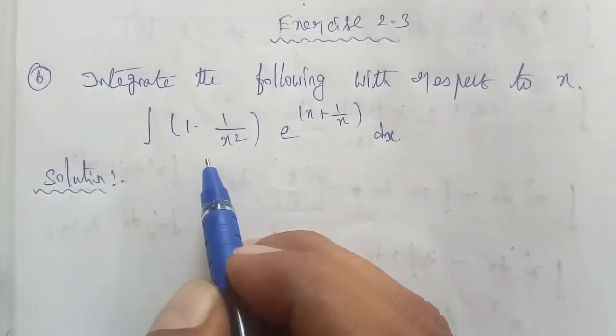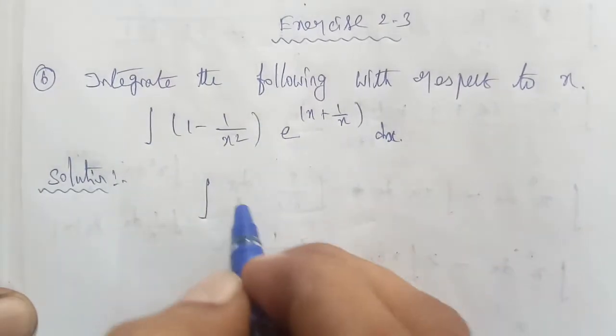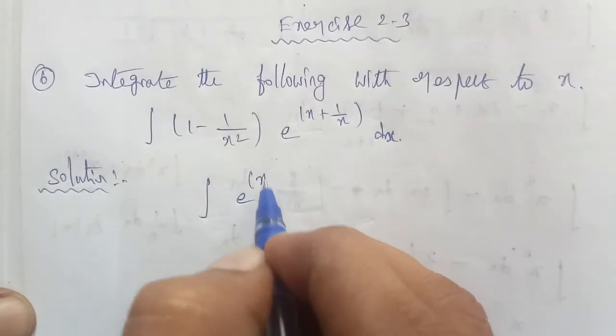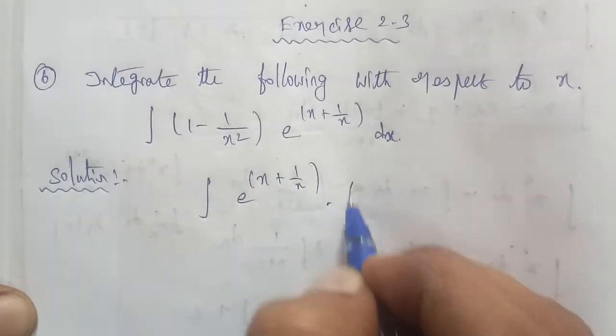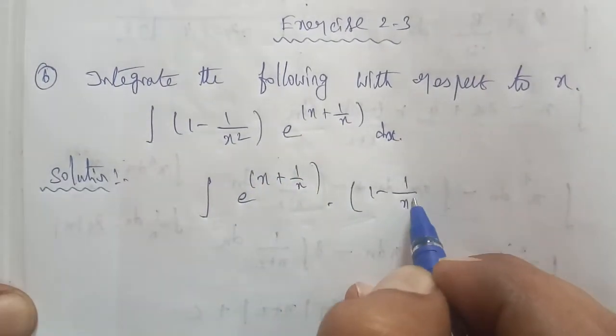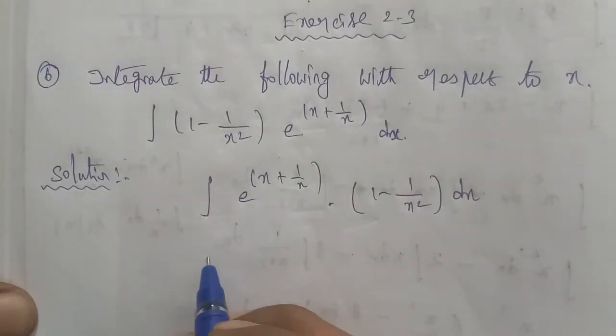So in the integrate, consider rearranged form. First of all, integrate e power of (x plus 1 by x) into (1 minus 1 by x square) dx.